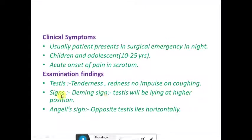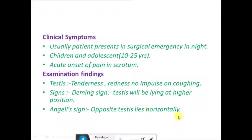There are two signs present in testicular torsion. First is Danning's sign — the testes concerned will be lying at a higher position because of twisting, so the length is decreased. Second is the Angel sign — the opposite testes lies horizontally. This is due to a defect in the mesorchium, which is present between the testes and epididymis.